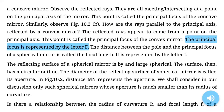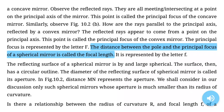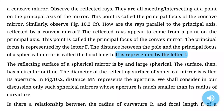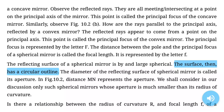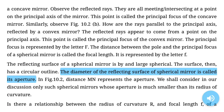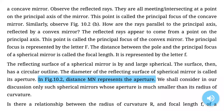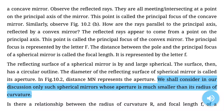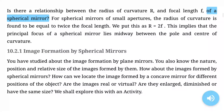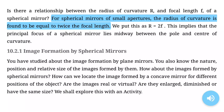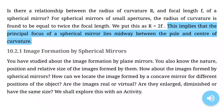The principal focus is represented by the letter F. The distance between the pole and the principal focus of a spherical mirror is called the focal length, represented by the letter f. The diameter of the reflecting surface of a spherical mirror is called its aperture. Is there a relationship between the radius of curvature R and focal length f? For spherical mirrors of small apertures, the radius of curvature is found to be equal to twice the focal length: R = 2f. This implies that the principal focus lies midway between the pole and center of curvature.